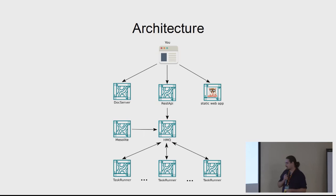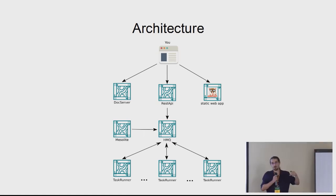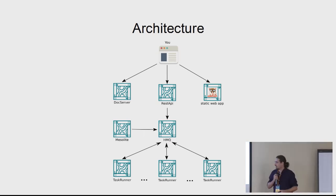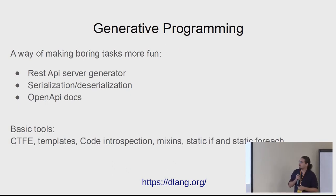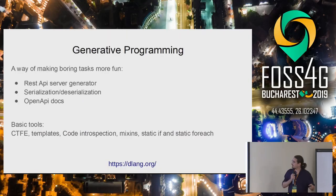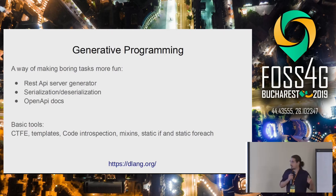For example, one of the tasks I run is keeping a history of all changes in the database. Or when you add a new site on a map, you want to increase the number of contributors for that map — this has to run in background because you might have thousands of points for a map. We also use a way of programming called generative programming, which for me is a way to make boring tasks more fun. I use it to generate the REST API, for serialization and deserialization, and to generate Open API docs. To achieve this you use compile-time function evaluation, which means you can run your code while the program compiles — using templates, code introspection, mixins, static if, and static foreach.